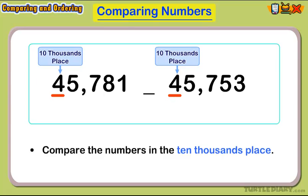The 4 is in the ten thousands place for both numbers. This doesn't help us determine which number is bigger, so we move to the next place value.